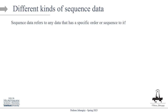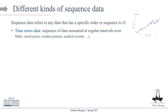Let's begin by looking at different kinds of sequence data. After all, we need to know what sequence data is and how we can model it. Sequence data refers to any data that has a specific order or sequence to it. We can start with the most obvious one, which is time series — a sequence of data measured at regular intervals. Examples are abundantly found, like stock prices, weather patterns, medical records, and so on. Here's Google stock price from 2015 to 2022, for example.